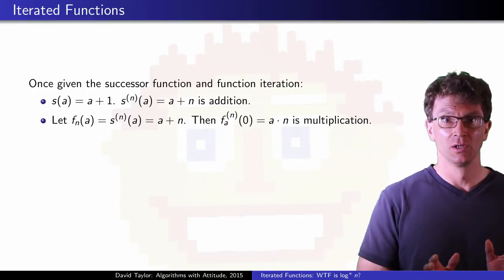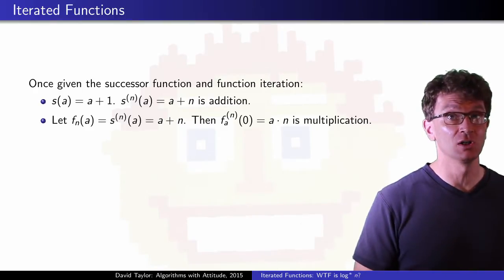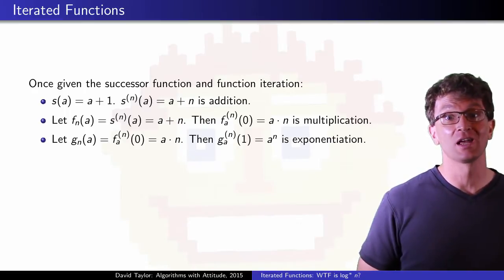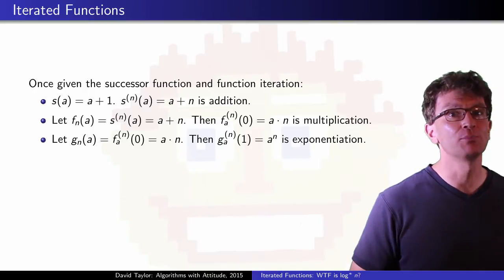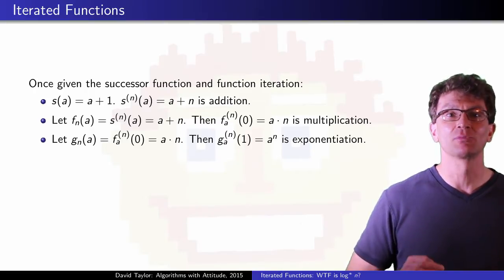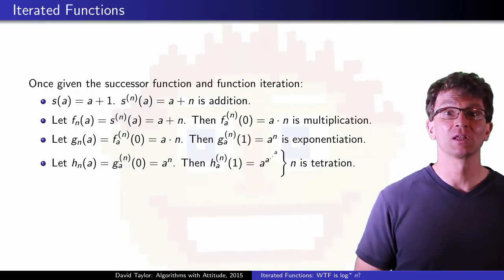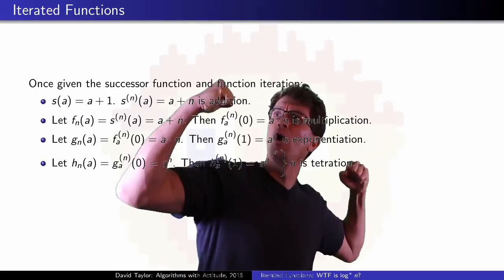So now if you make a new function, as shorthand for addition, and then we iterate over that function, we get multiplication. And if we iterate over multiplication, we get exponentiation. Now we already knew these, but if we keep going, maybe now we are going to get to something new. If we iterate over exponentiation, we get something called tetration, or THE TOWER OF POWER!